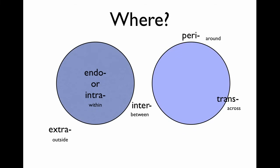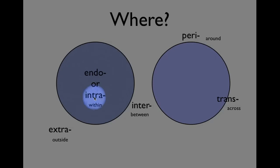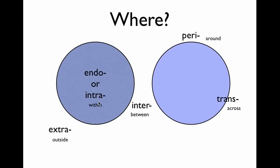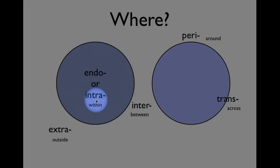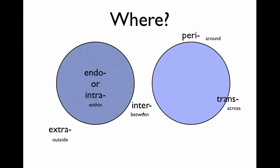Spend some time with directional prefixes because they will mess you up — these little guys are what drive people crazy. Endo or intra both mean within. But look at the difference: intra versus inter, which means between. Intracellular means within a single cell; intercellular means between cells. It sounds like a very small difference but it means a dramatically different idea.